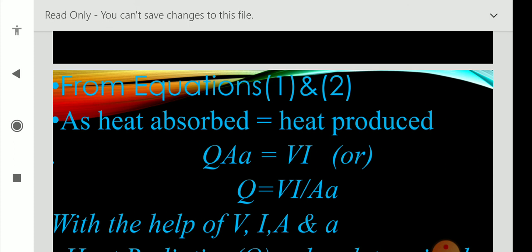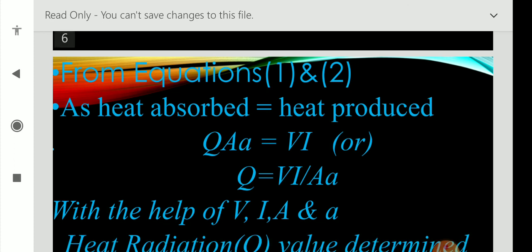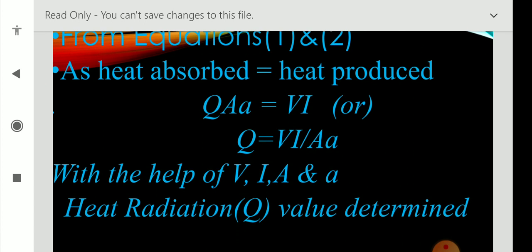That means heat absorbed by S1 is equal to heat produced by S2. Therefore, Q times A times a is equal to VI. Therefore, Q is equal to VI divided by A times a. Then the final conclusion is that the heat radiation will be calculated when we have the values of V, I, A, and a.